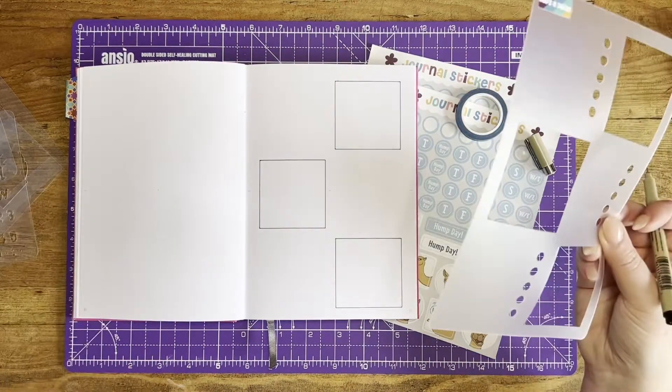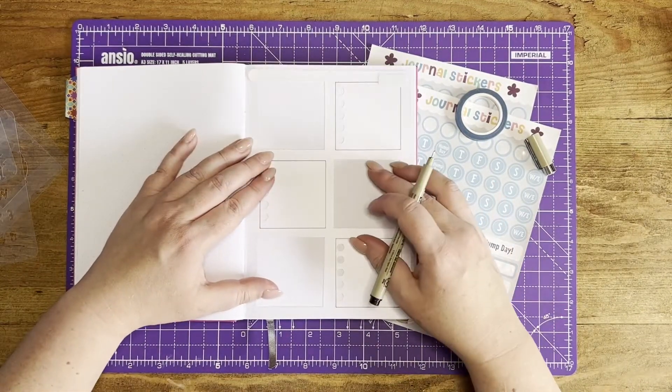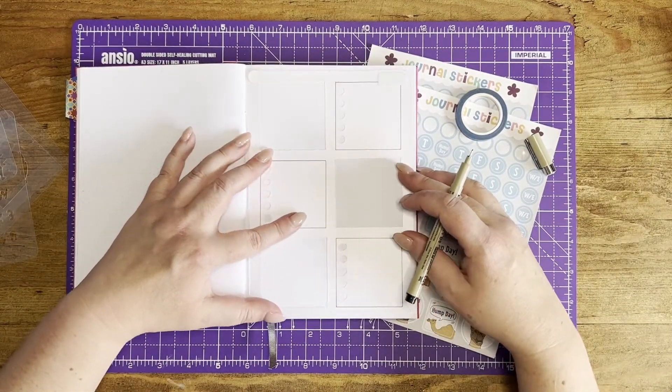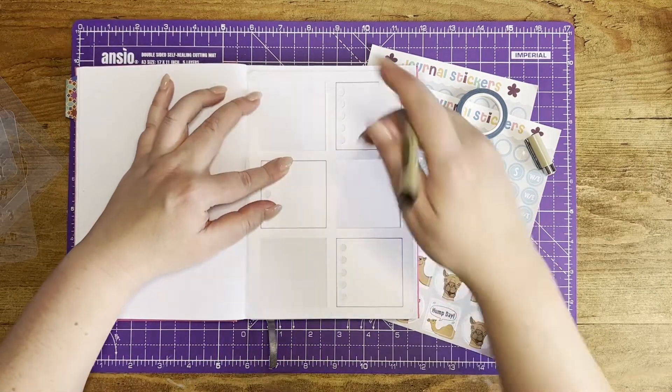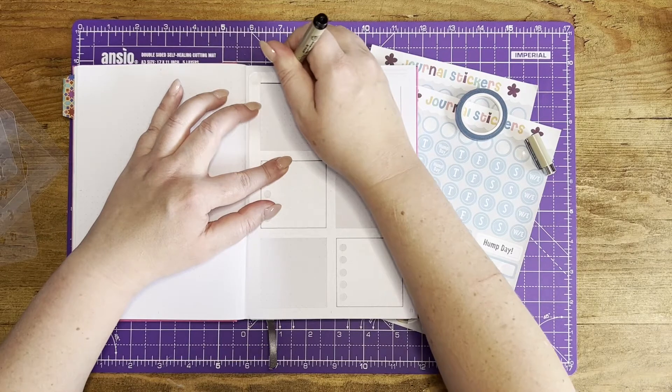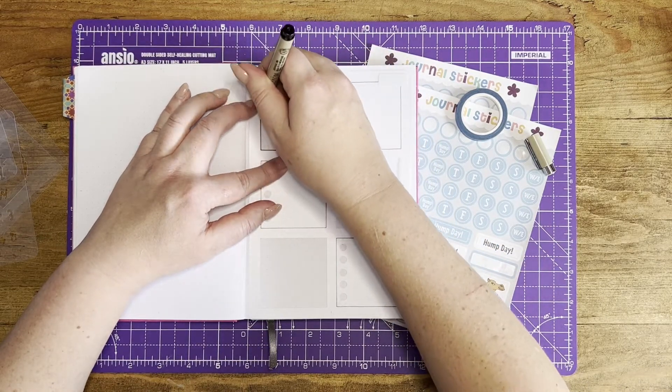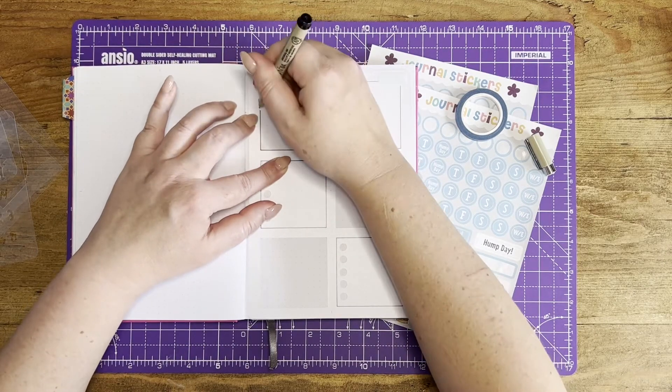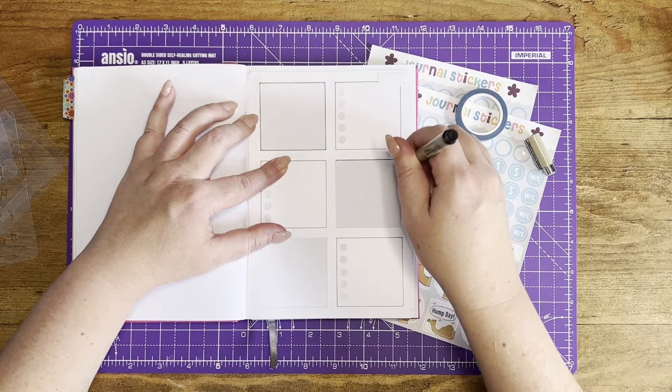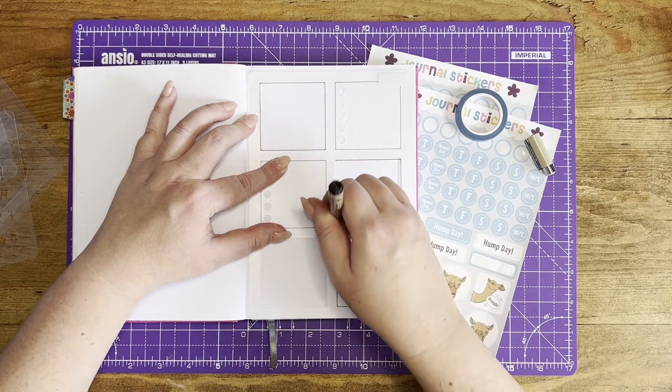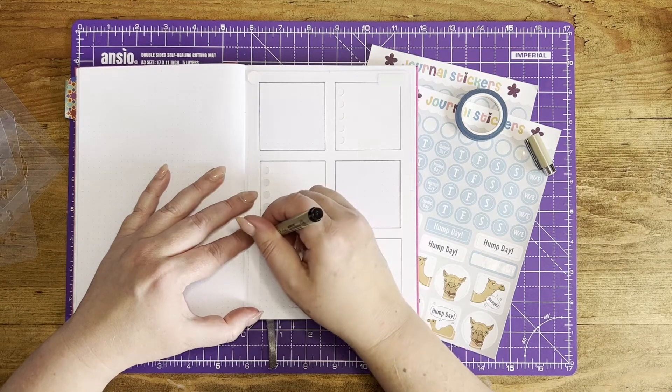So taking those three boxes, flip your stencil, line it up. There we go. And trace the other three boxes again. Get my finger now in the way. Last one.